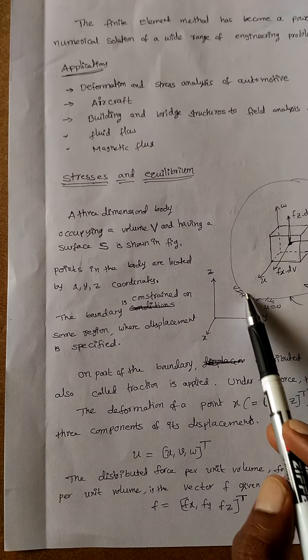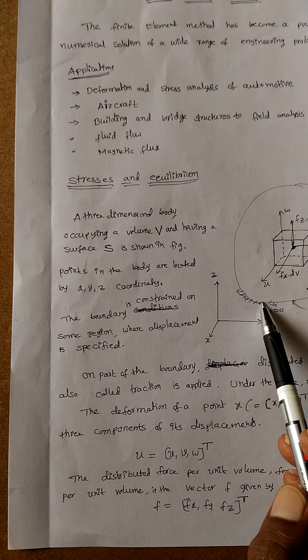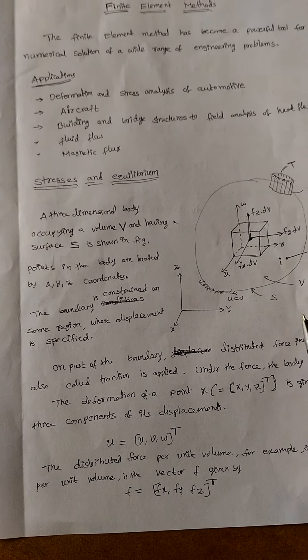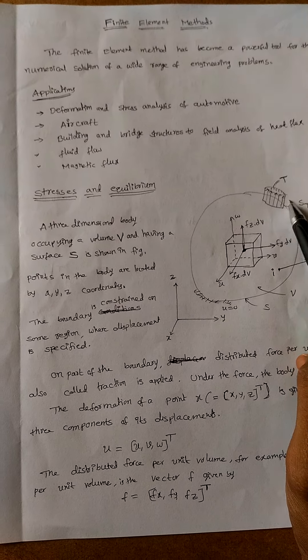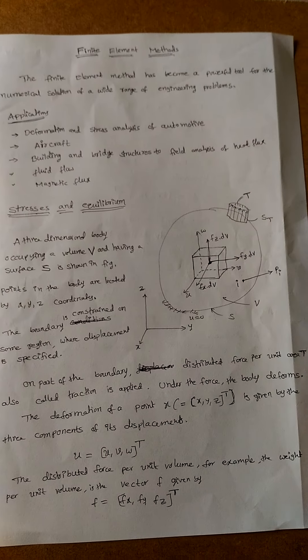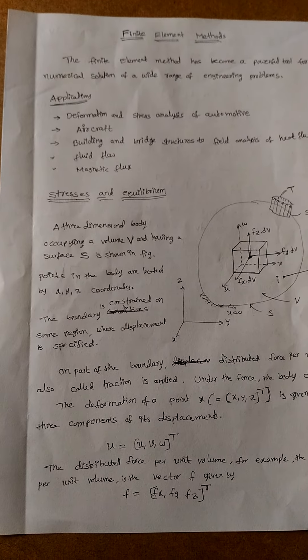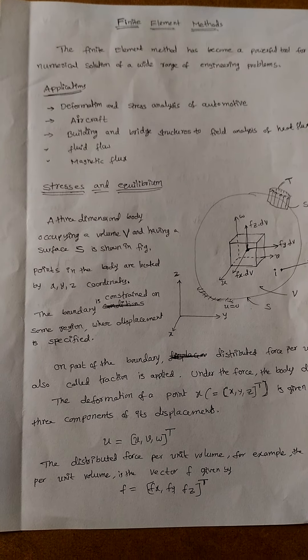This is the boundary where the constraint displacement is specified. On a part of the boundary, distributed force per unit area is called traction, which is applied.